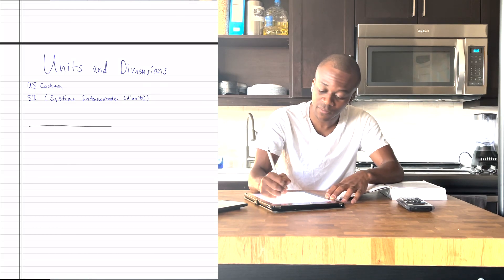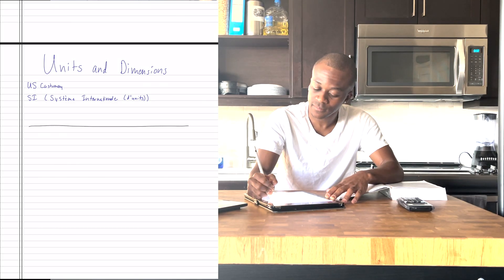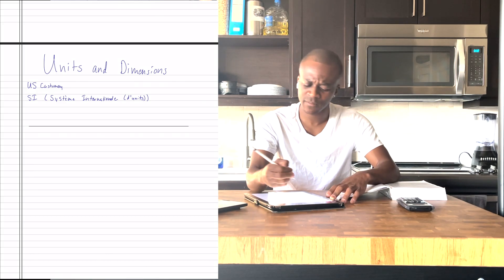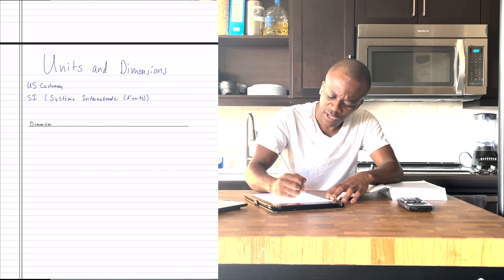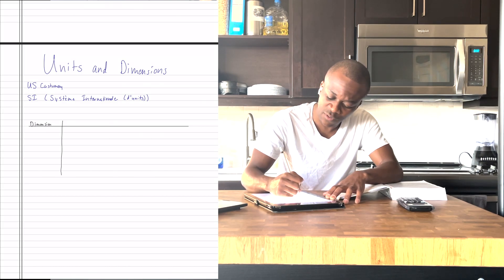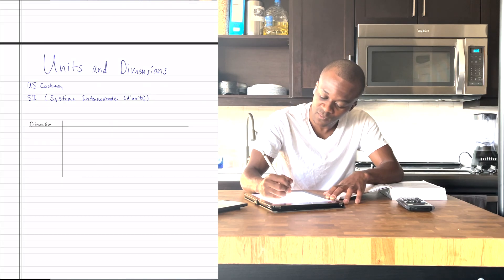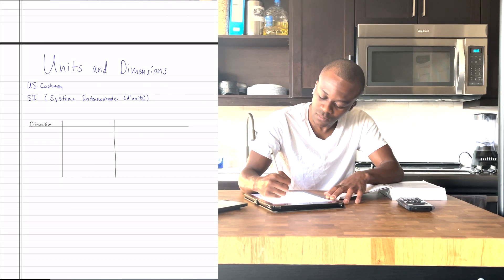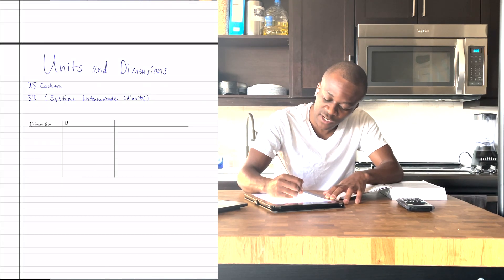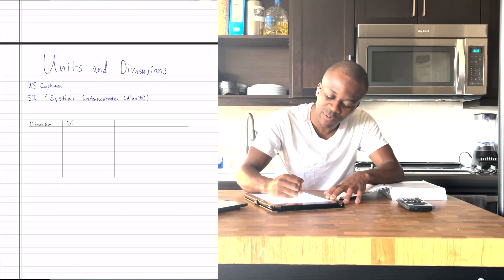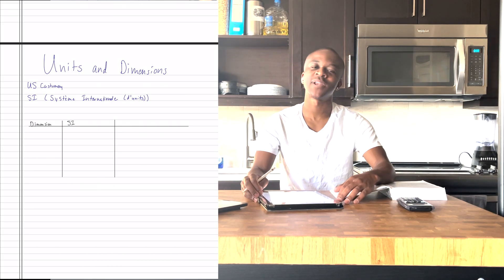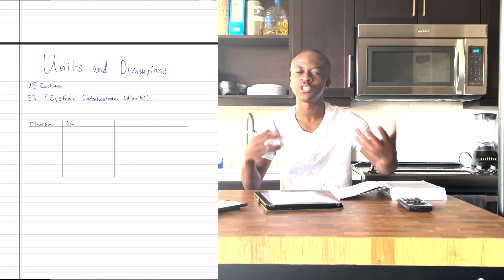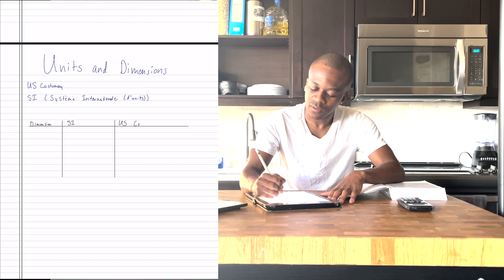Now what units do we have? I'm going to make a little table here. I'm going to write dimension, and we're going to look at how these things compare between the two systems. Let's do SI first. SI is what we're going to be using most of the time. US customary is there, but I think SI is a lot more intuitive.